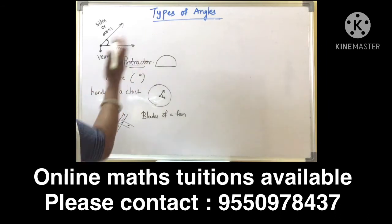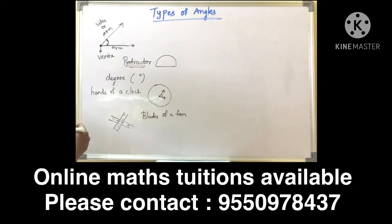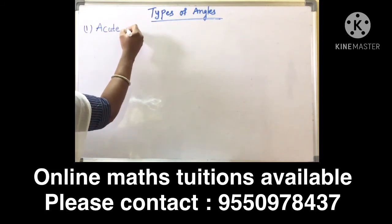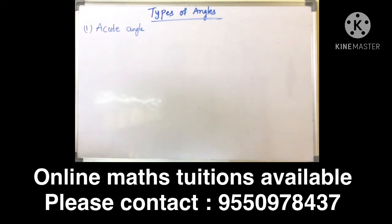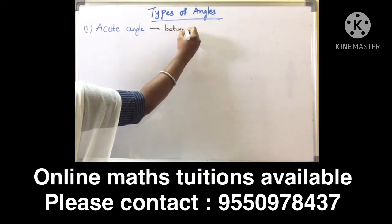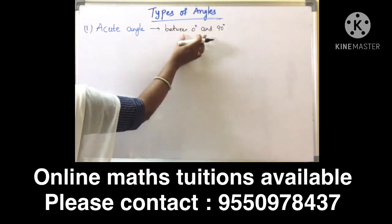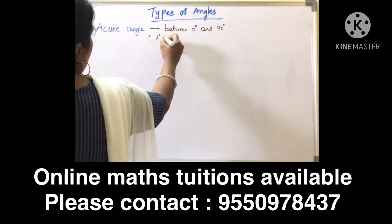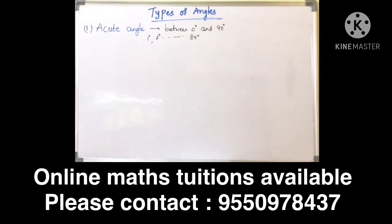Now we are going to discuss types of angles. As the angle increases, the name also changes. The first type is acute angle. An angle whose measure lies between 0 and 90 degrees is called an acute angle. Between means 0 and 90 are not included — so 1 degree, 2 degrees, and so on up to 89 degrees. These form acute angles.